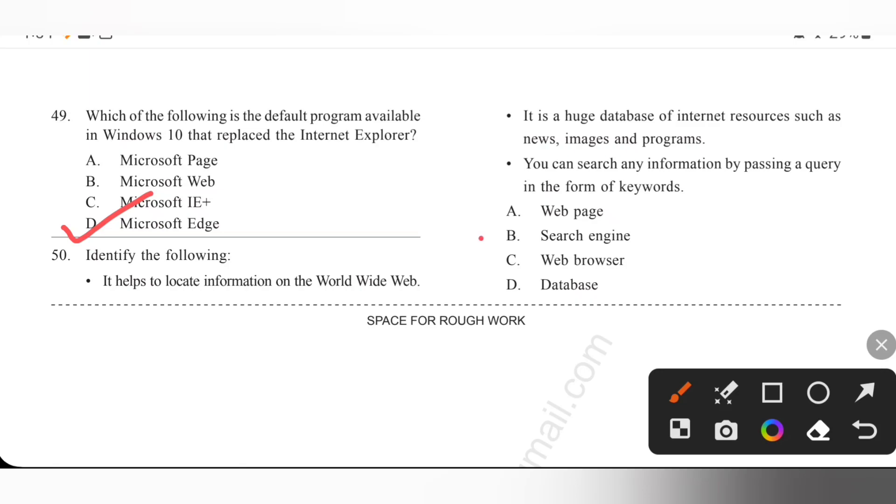Question 50: Identify the following. It helps to locate information on the worldwide web. It is a huge database of Internet resources such as news, images and programs. You can search any information by passing a query in the form of keywords. So, it is search engine. Search engine. Option B is the correct answer. Search engine helps to locate information on the worldwide web. It is a huge database of Internet resources such as news, images and programs. We can search any information by passing queries in the form of keywords. So, option B is the correct answer.